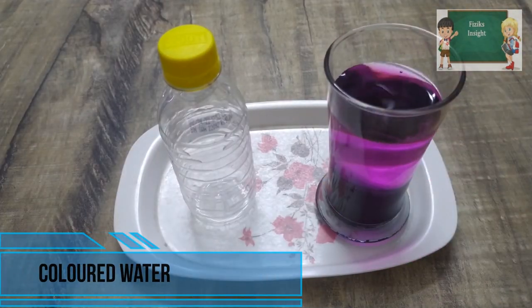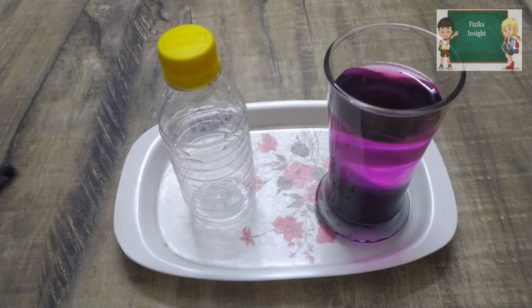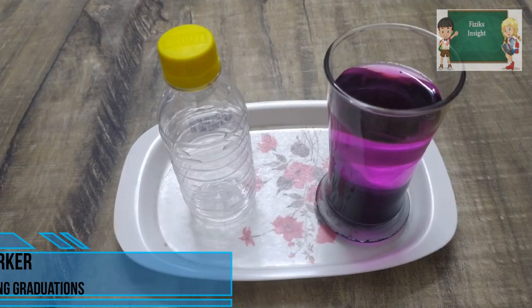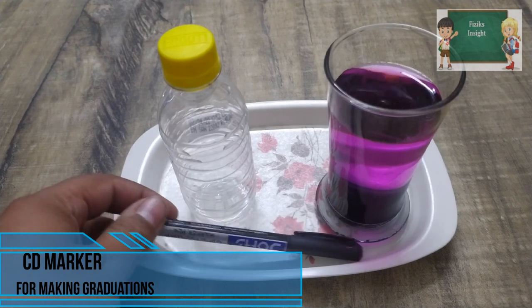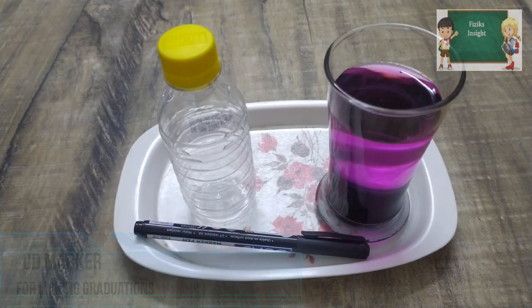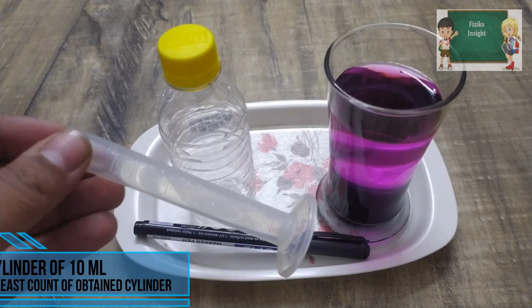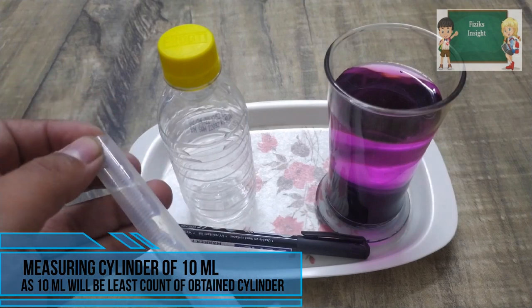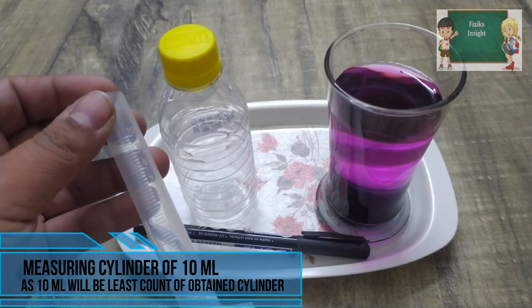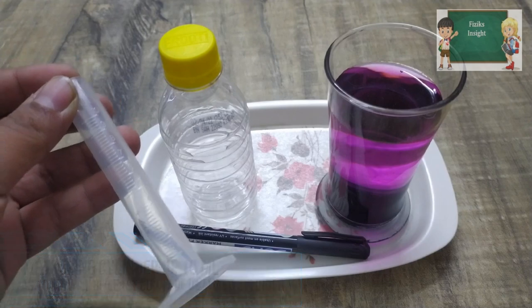some colored water, a CD marker for marking graduations, and a measuring cylinder of 10 ml. The least count for the cylinder obtained is going to be 10 ml.